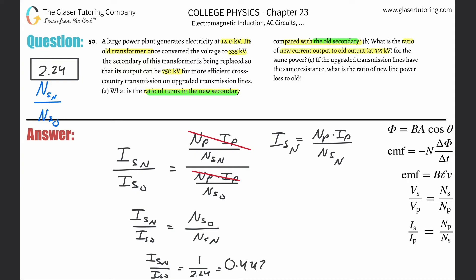That's the relative value — the new output current is roughly half the old. Now letter C: if the upgraded transmission lines have the same resistance, what is the ratio of new power line loss to the old? We need to find the new secondary power divided by the old secondary power.